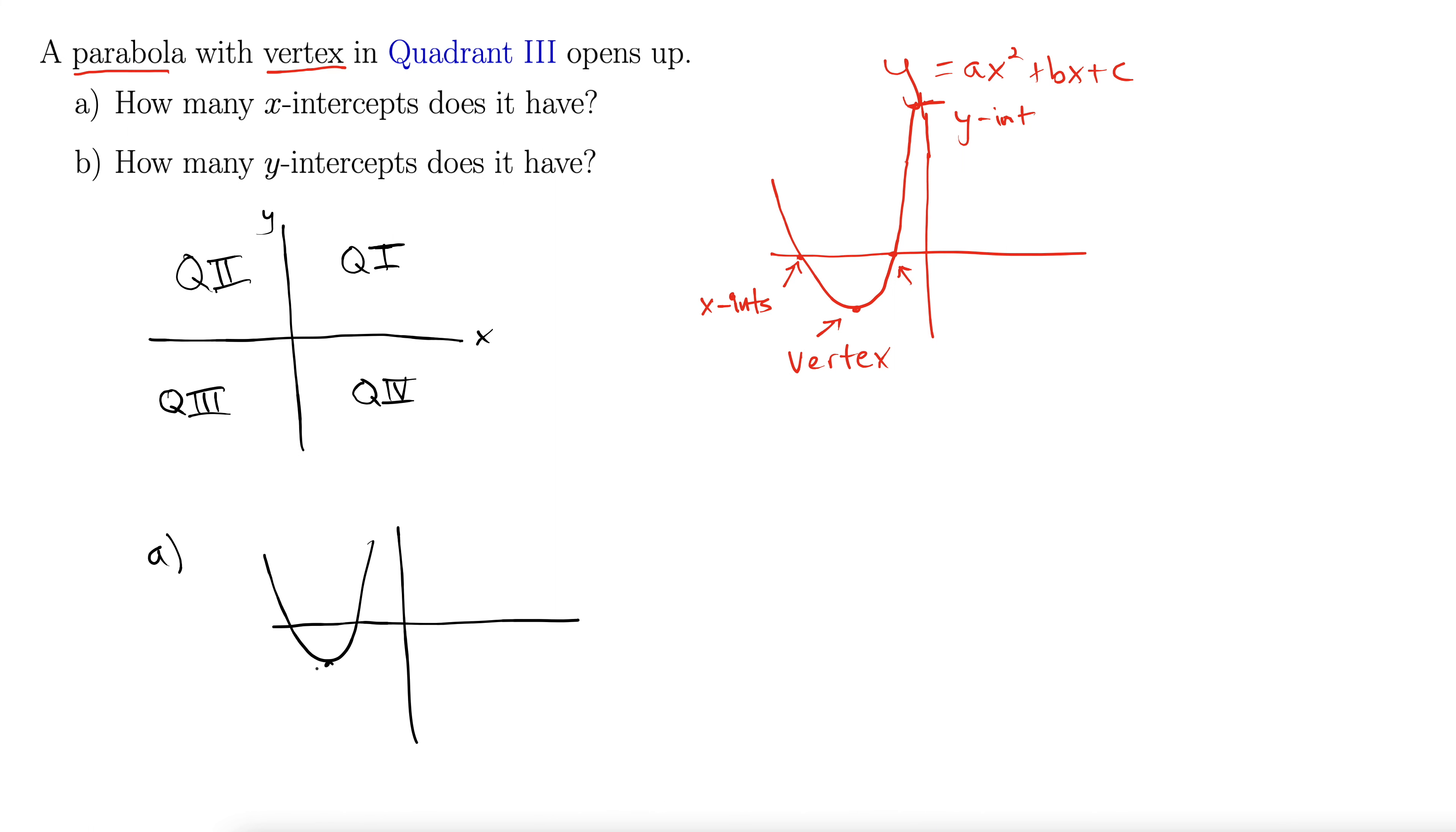Here we go. So there's our vertex in quadrant three. And it opens up. Well, here we can see that it's going to have two x-intercepts. So how many x-intercepts does it have? Two.